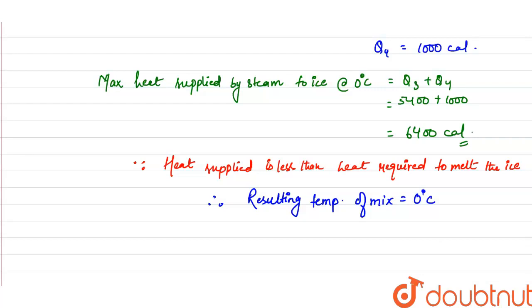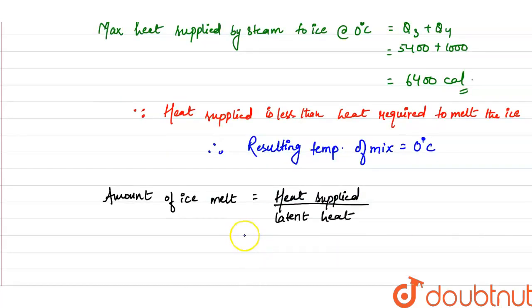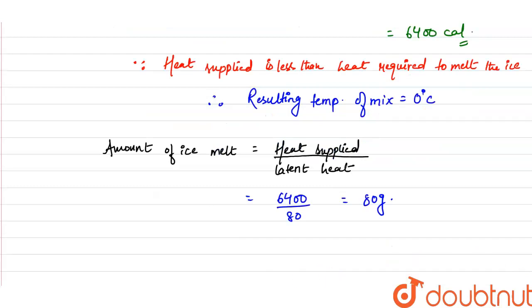Now we find the composition. The amount of ice that melts = heat supplied ÷ latent heat = 6400 ÷ 80 = 80 grams. So 80 grams of ice melts.